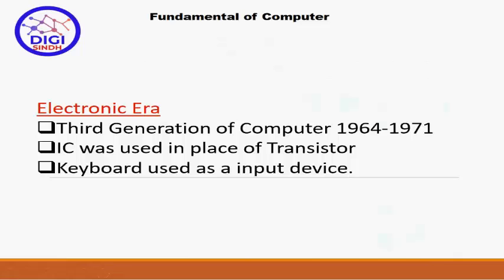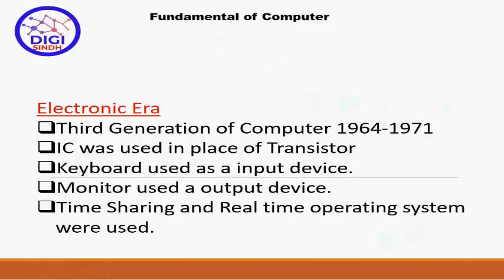Third generation of the computers کا time period 1964 سے 1971 تک کا ہے۔ اس میں transistors کو integrated circuit (IC) نے replace کیا۔ اس era کی نمایاں چیزوں میں keyboard بطور input device آئی - پہلے second generation میں keyboard کی جگہ punch cards استعمال ہوتے تھے۔ Third generation میں keyboards اور monitor دونوں devices متعارف ہوئے۔